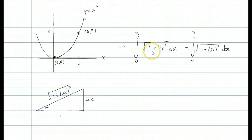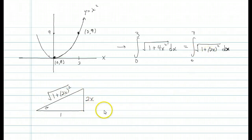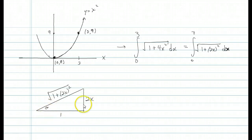Now notice again, this is an integral involving a square root. In this case, it's a sum of two things, and we can write each term as a perfect square: 1 is 1 squared, and 4x squared is (2x) squared. So we can view 1 and 2x as two sides of a right-angled triangle, putting 2x as the height and 1 on the base, because then the trig function that connects theta, 2x, and 1 together is tangent.